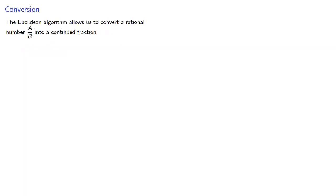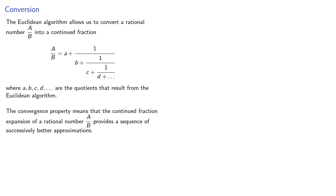The motivation for this change is that the Euclidean algorithm allows us to convert a rational number A over B into a continued fraction of this form, where a, b, c, d, and so on are the quotients that result from the Euclidean algorithm. The convergent property means that the continued fraction expansion of a rational number A over B provides a sequence of successively better rational approximations which will have smaller denominators.